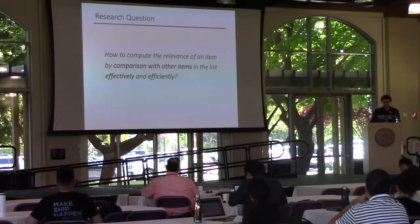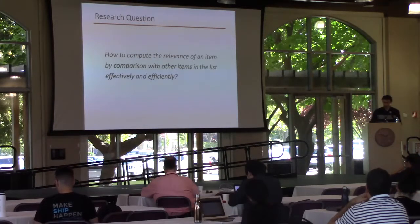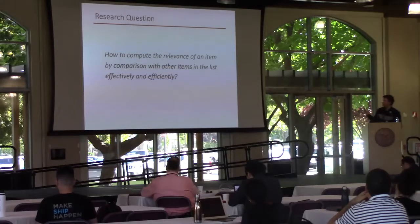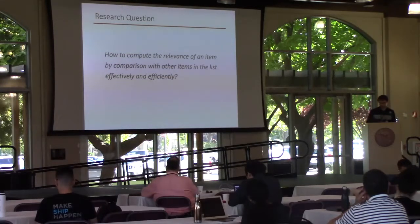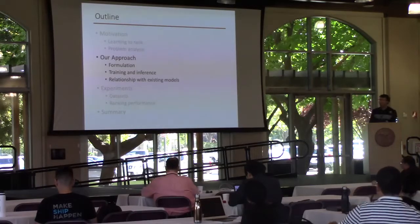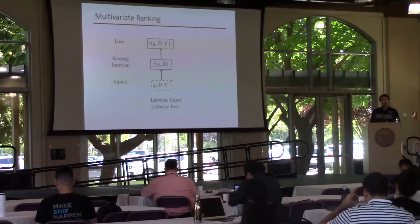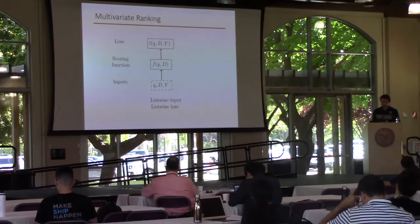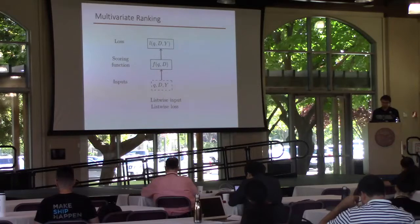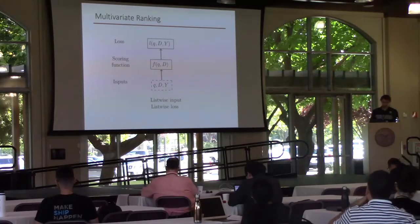Based on these observations, the research question we want to study in this paper is: how to compute the relevance of an item by comparison with other items in the list, effectively and efficiently. In the next part, we will introduce our main approach. We try to solve the problems of existing learning-to-rank methods by introducing a new scoring paradigm named multivariate scoring functions, where the model takes multiple documents as input and jointly predicts ranking scores based on their interaction and comparison.